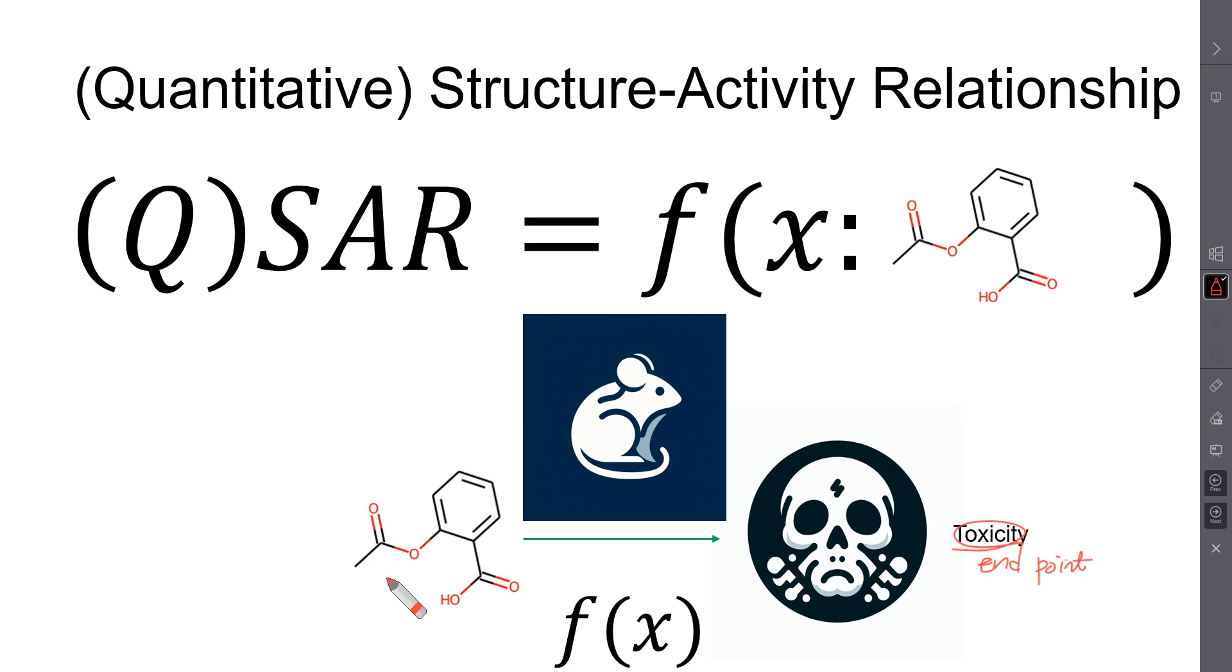So QSAR model takes structure as an input, which is an x of this function, and output of this function will be endpoint. In this example, toxicity.